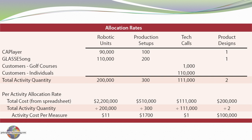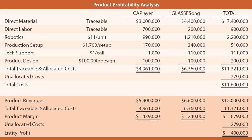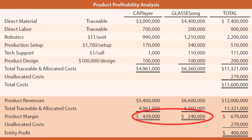These rates are used to determine product profitability. For robotics at $11 per unit: Cap Player had 90,000 units, giving $990,000 in robotics cost; Glasses Song had 110,000 units, giving $1,210,000 — totaling the $2,200,000 robotics cost assigned across both products. We apply each rate to each product for all cost components.